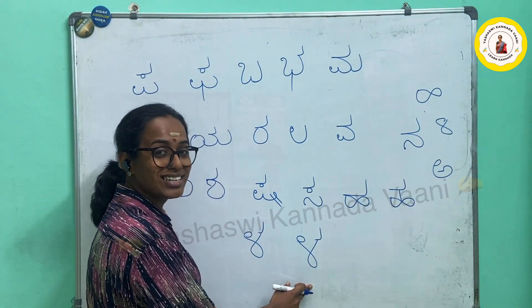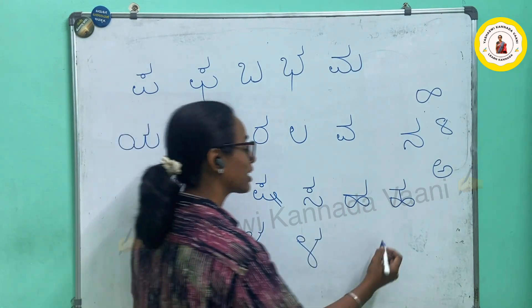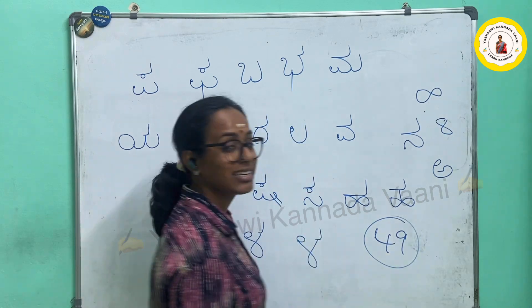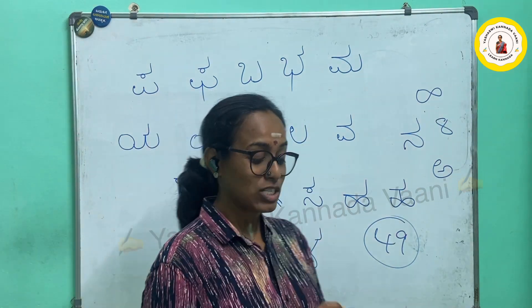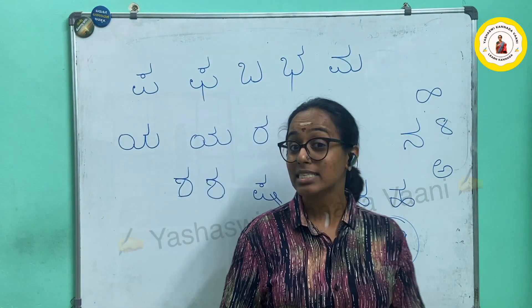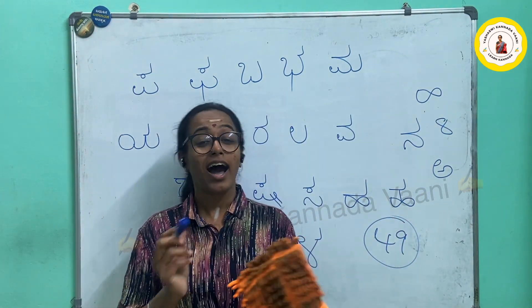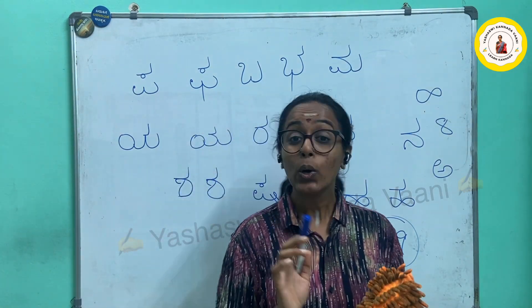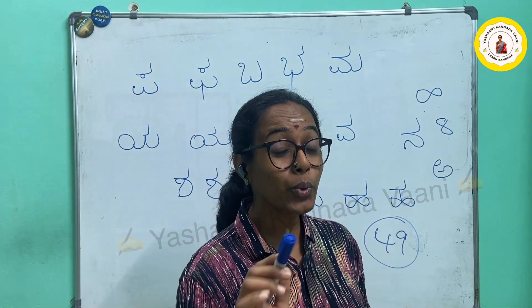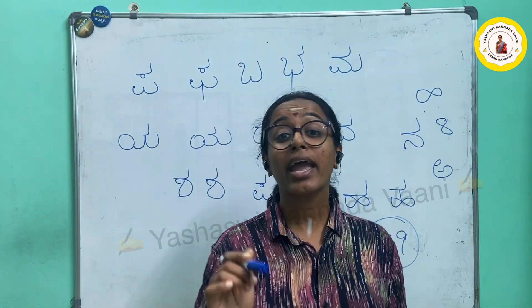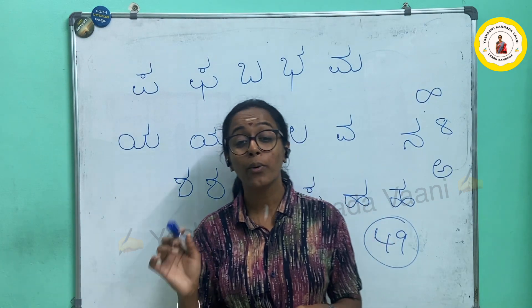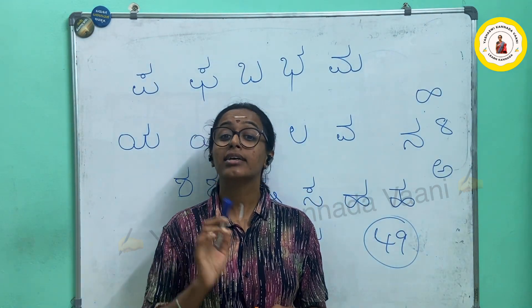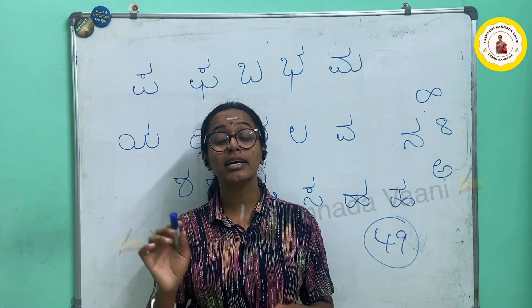So here we complete 49 letters in Kannada. Now we can sing a song: A, A, A, I, E, E, O, O, U, Roo — E, E, E, I, O, O, O, O, Am, A, Ha!